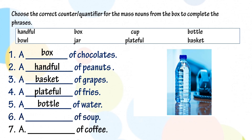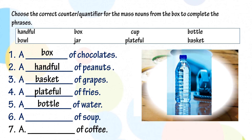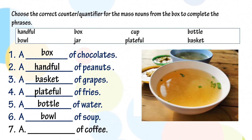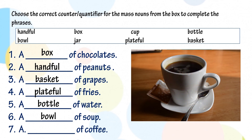Number six, a blank of soup — we use the quantifier: bowl. A bowl of soup. Number seven, a blank of coffee — we use the quantifier: cup. A cup of coffee.